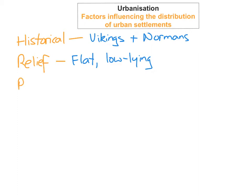The third factor is rivers. Rivers play a very important part in the development of urban areas and where people actually settle down, because 95% of the major cities are developed along rivers. In the past, people needed easy access to water, and they also used rivers for trade, for transporting goods, and also as a crossing point. So rivers are an extremely important factor in the development of urban settlements.